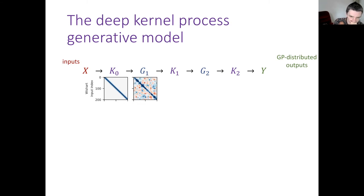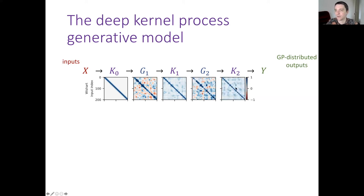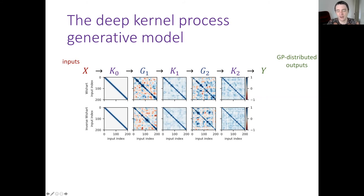We typically choose a distribution such that the expectation of G equals the kernel of the previous layer — adding noise around the infinite neural network solution. Starting with a kernel from evenly-spaced inputs with a squared exponential kernel, we sample a gram matrix (similar but noisy), apply kernel transformation k (which always produces positive values for squared exponential), add noise, and apply the transformation again. A key distribution is the Wishart; another important one is the inverse Wishart, which adds slightly different noise patterns.